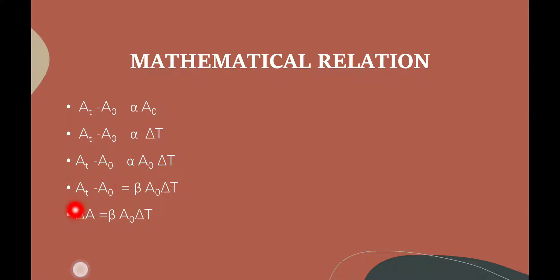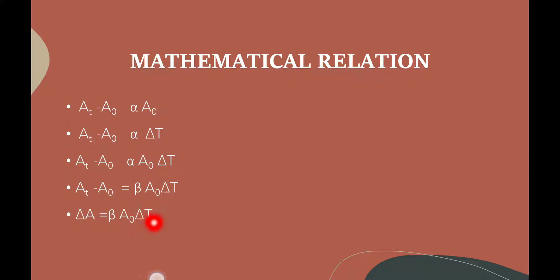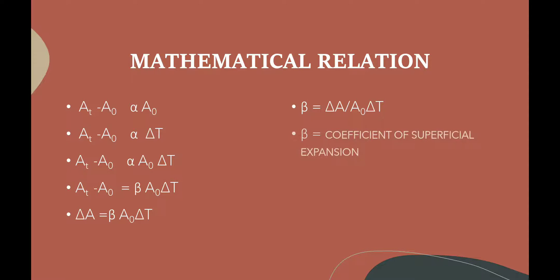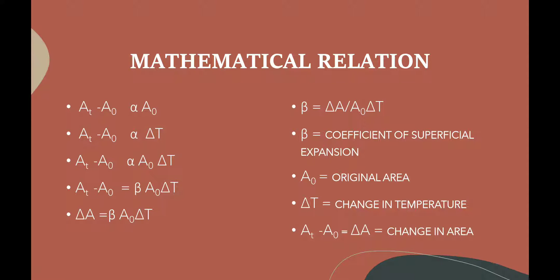The expansion AT minus A0, written in short as delta A, where delta A is the change in area and delta T is the change in temperature, gives us: delta A = beta × A0 × delta T. On rewriting the equation for beta, the coefficient of superficial expansion: beta = delta A / (A0 × delta T), where A0 is the original area, delta T is the change in temperature, and delta A is the change in area.